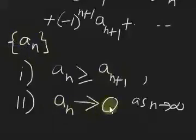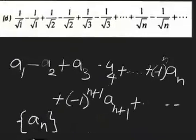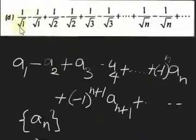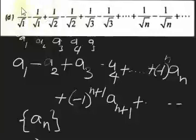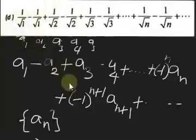Let's check these conditions on an example. We have terms a sub 1, a sub 2, a sub 3, a sub 4, a sub 5 — ignoring the signs and just considering the positive quantities. Looking at the first two terms: a sub 1 is 1 over square root of 1, which equals a sub 2. So the first two terms are equal.